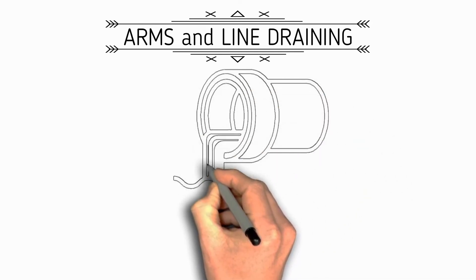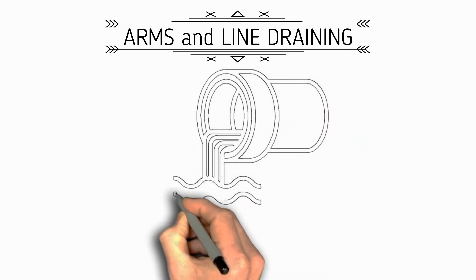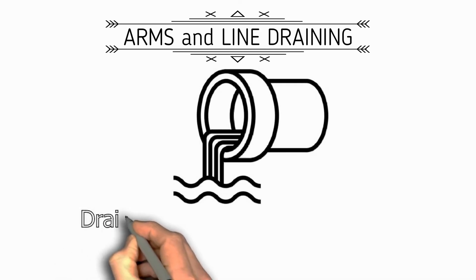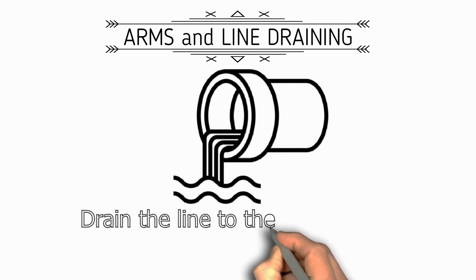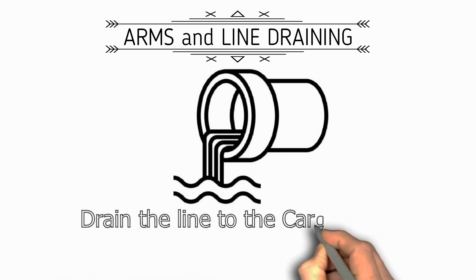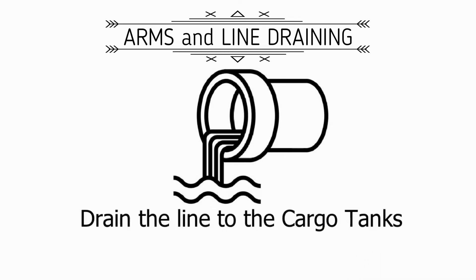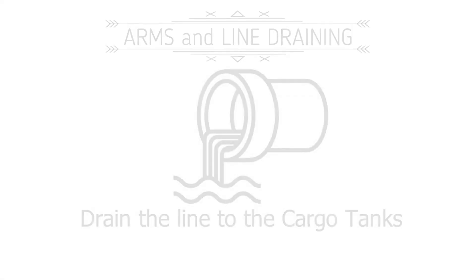Next is arms and line draining. On most LNG ships, the manifold is drained via the spray header to a cargo tank. Check that the spray valves are open on one tank. This is to get rid of all liquid LNG still remaining in the shore arm and manifold line and send it back to the cargo tanks.